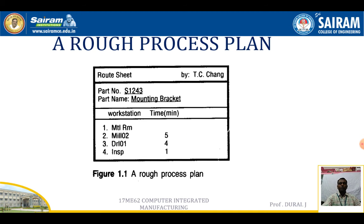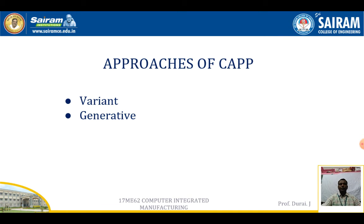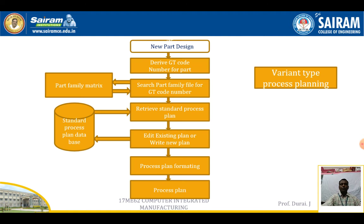There are two types of CAPP approaches. The first is variant type CAPP and the second is generative type CAPP. In variant type CAPP, when we produce a new part design, the first step is to derive the GT code number for the part. The second step is to search the part family file for that GT code number.